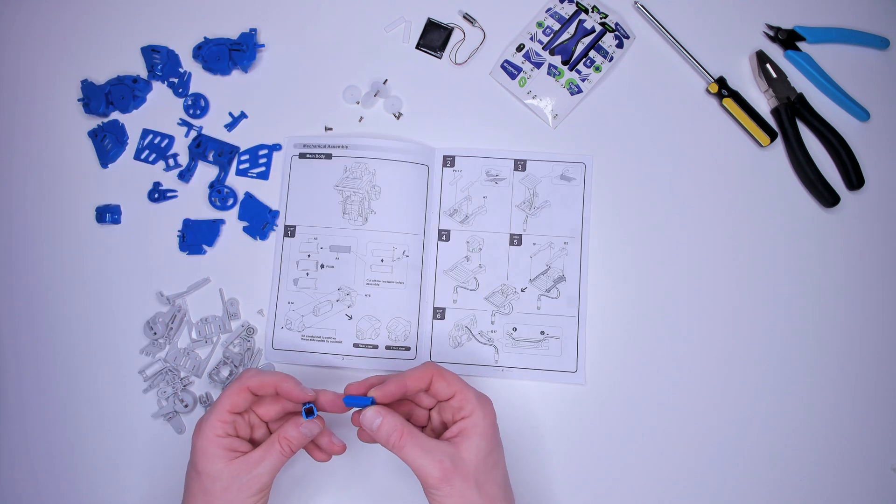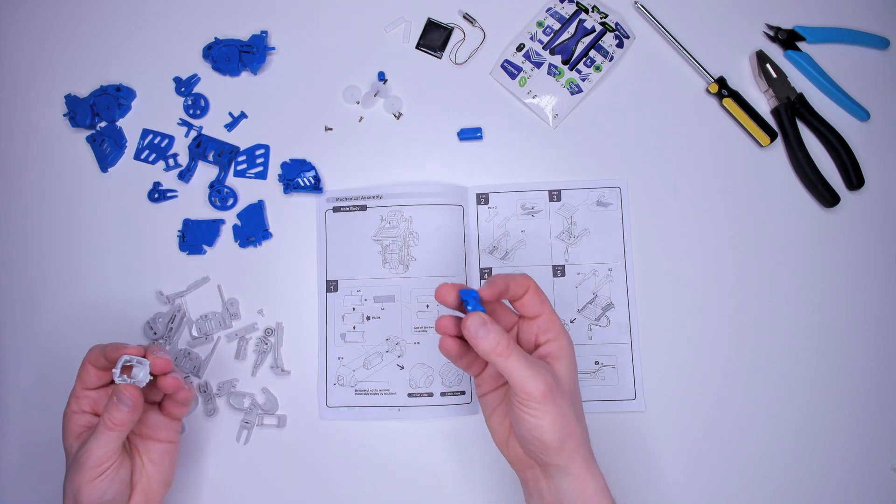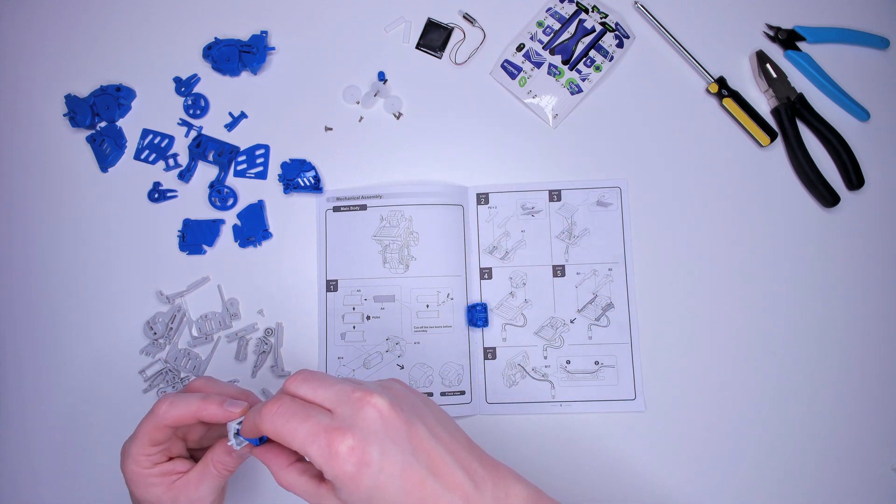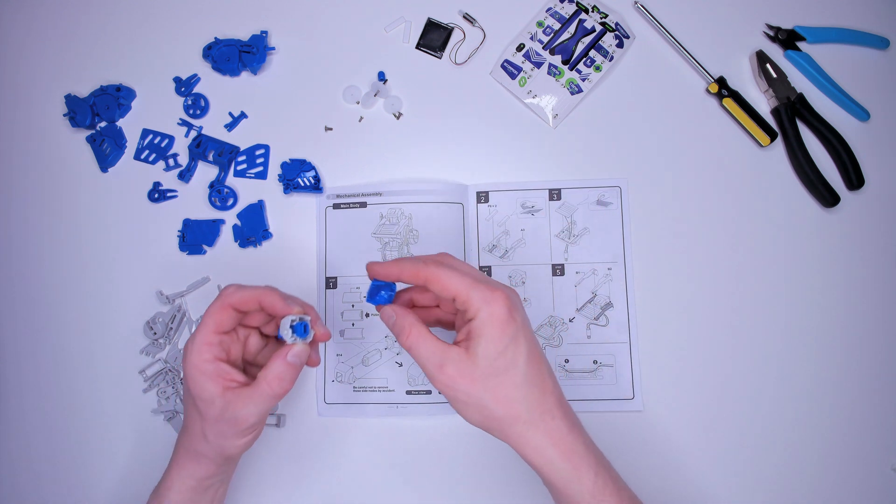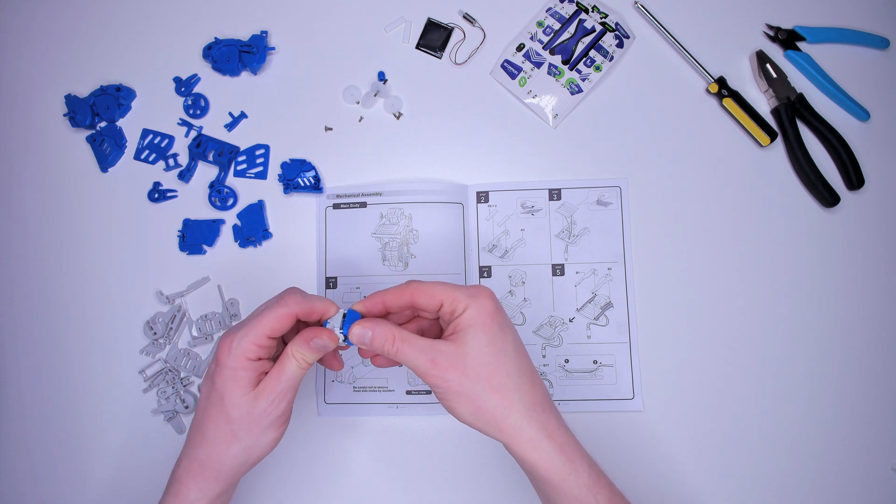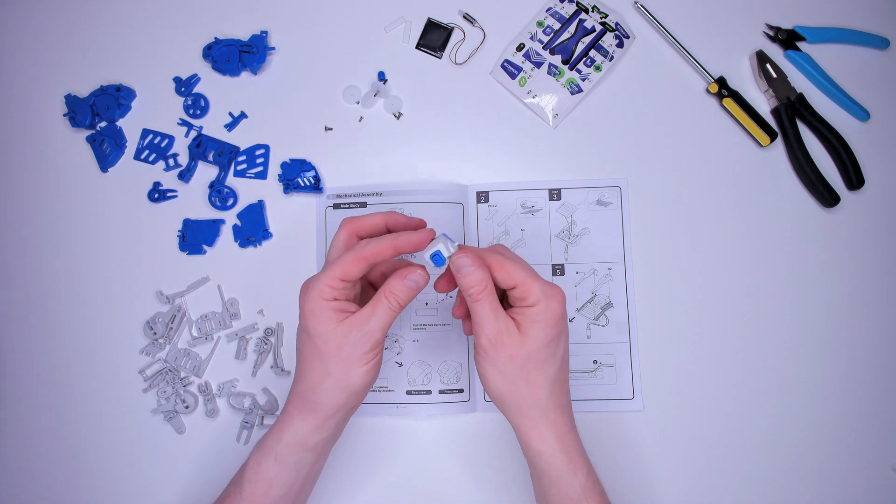We're making the head first. Take these two pieces and put one inside the other. Then take a white part and a blue part to clip them together around that piece we just made. Firmly pressed together. A head.